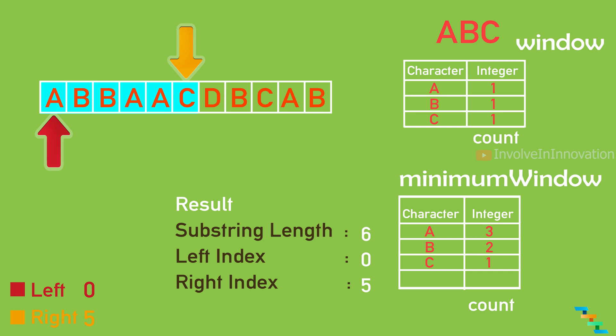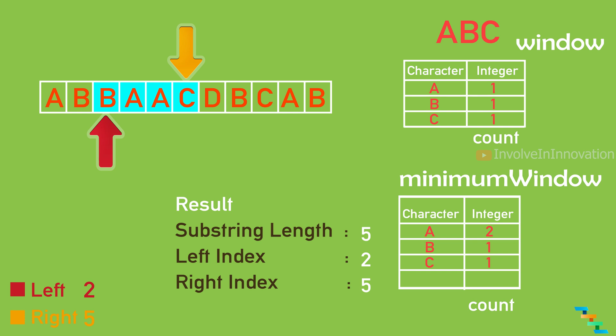Now we take the left index value and remove it from the minimum window hash table. The first left index value is 'a' — remove it. Both hash tables still match. Increment the left index, which now points to 'b'. Remove 'b' — now a is 2, b is 1, c is 1, still matching. Increment the left index again to 'b'. Remove this 'b' — b becomes 0. Now a is 2 and c is 1, which is not matching with the window hash table. So increment the right index.